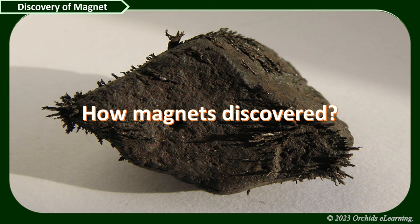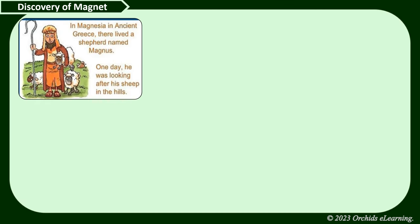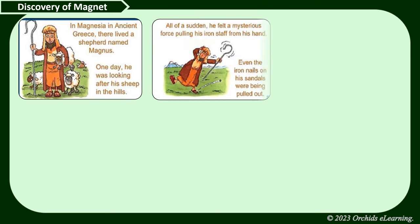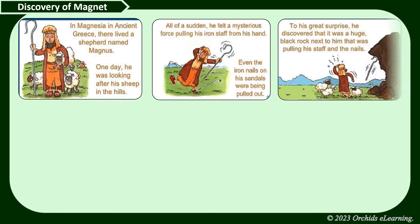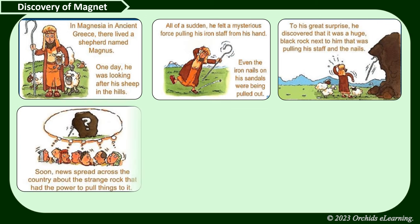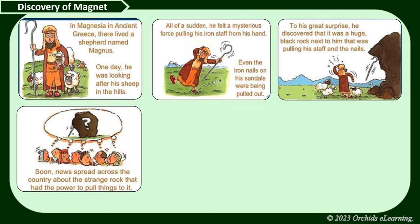There are many stories about how magnets were discovered. According to a popular story, a magnet was discovered by a Greek shepherd named Magnus. It is said that the nails in his shoes and the iron tip of his staff got stuck to a large black rock on which he was standing.